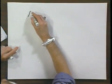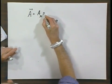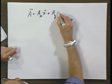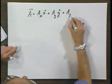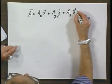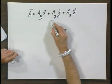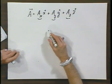If we know the vector A, what now is the vector minus A? A equals A of X, X-hat, plus A of Y, Y-hat, plus A of Z, Z-hat. This is the component of A in the X direction, component of A in the Y direction, component of A in the Z direction.